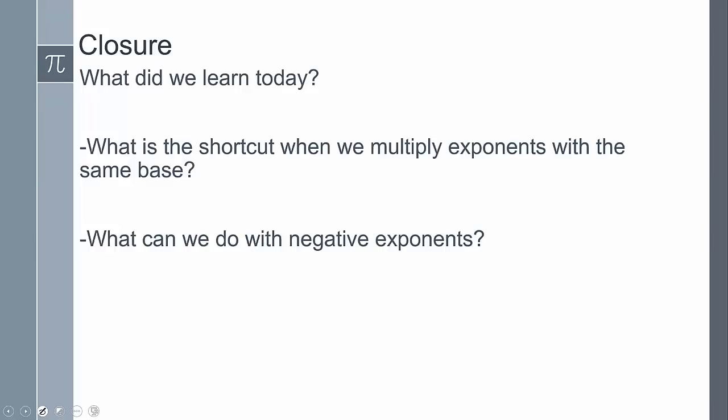Concluding today's lesson, we talked about the different properties of exponents — those are the primary ones to focus on. When we multiply exponents with the same base, we add the exponents together. So x to the n times x to the m equals x to the n plus m.